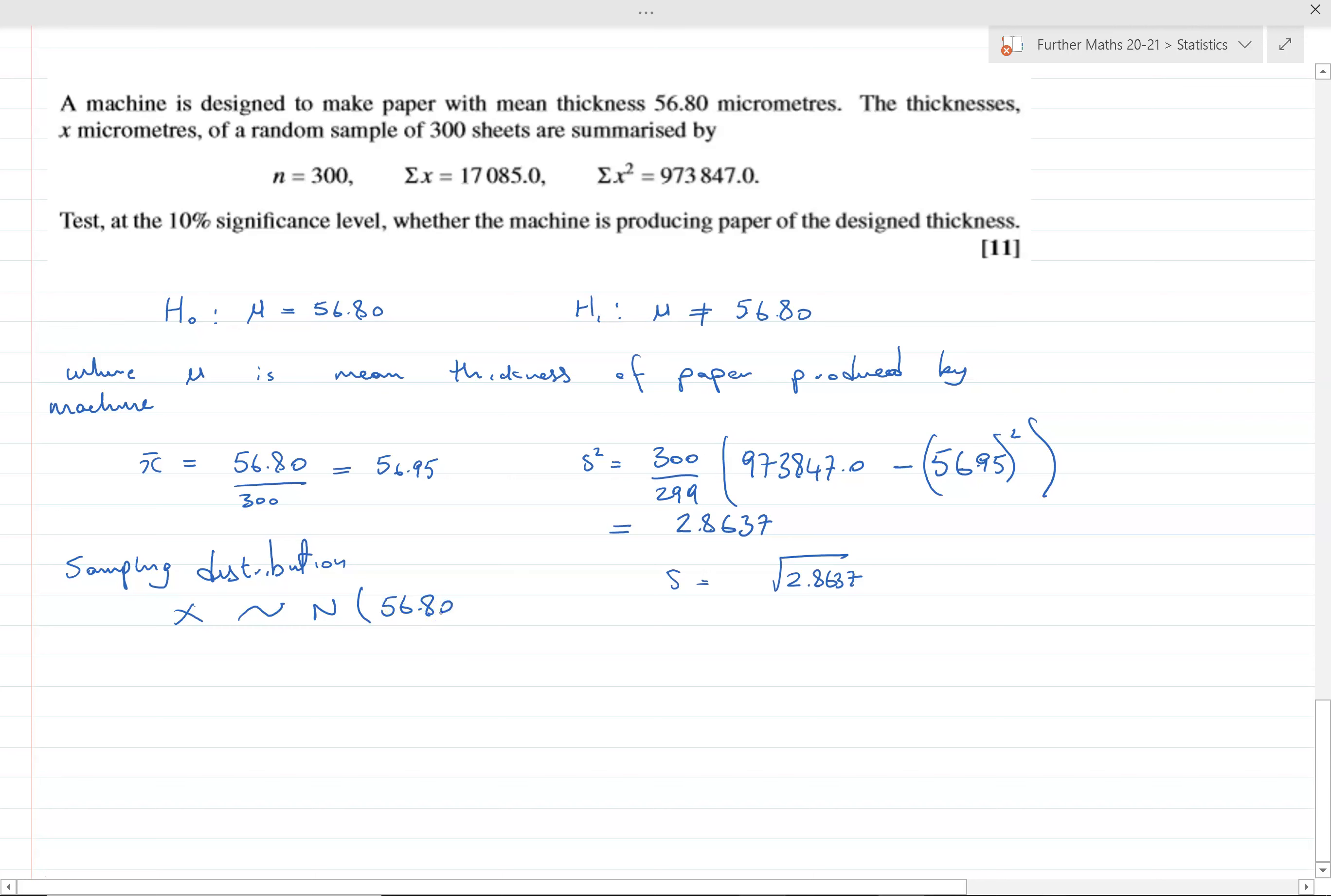x̄ is normally distributed with mean 56.80 because that's our null hypothesis, that's what we're testing against. The variance, because we don't know what it is, we're going to have to use this as an estimator, so that's 2.8637 divided by the sample size 300.